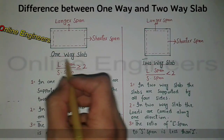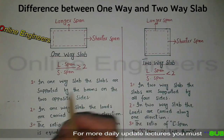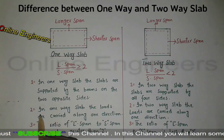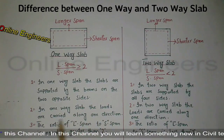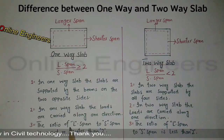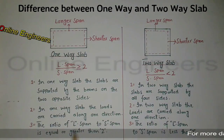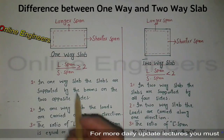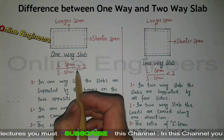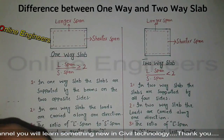Now I want to discuss the one-way slab. In a one-way slab: number one, the slabs are supported by beams on two opposite sides; number two, the loads are carried along one direction; number three, the ratio of longer span to shorter span is equal to or greater than 2.